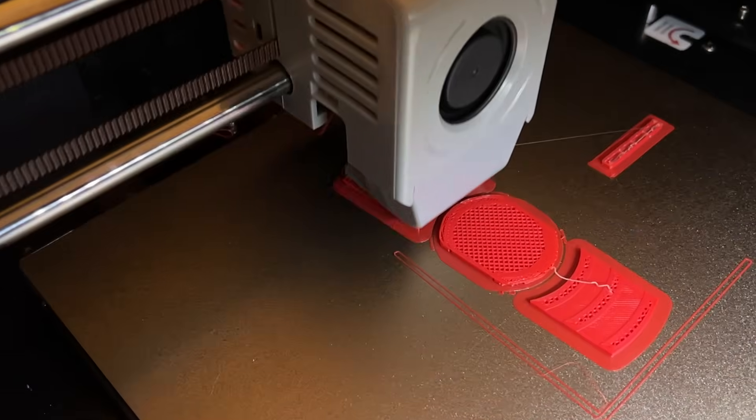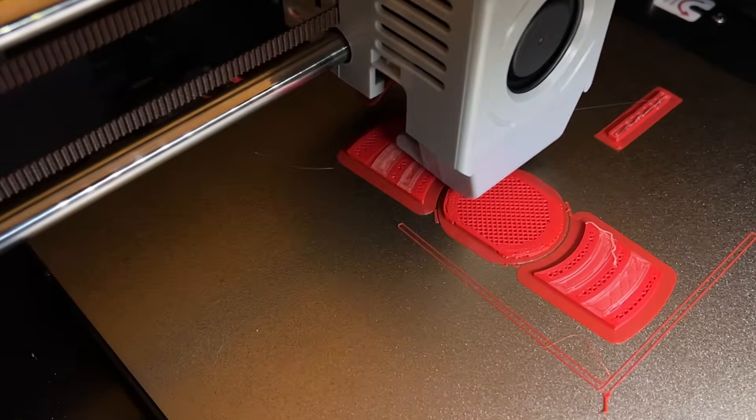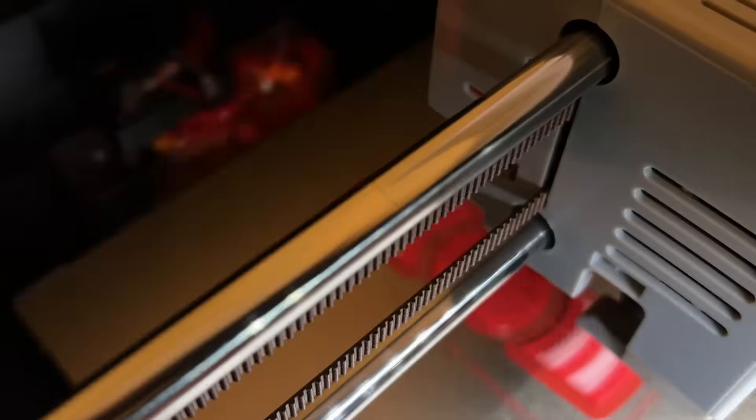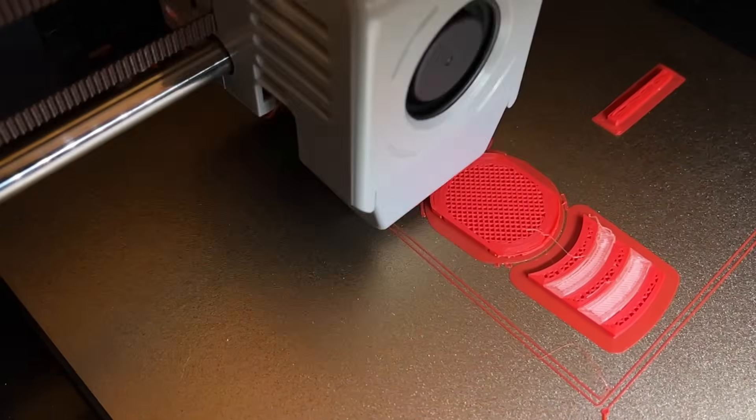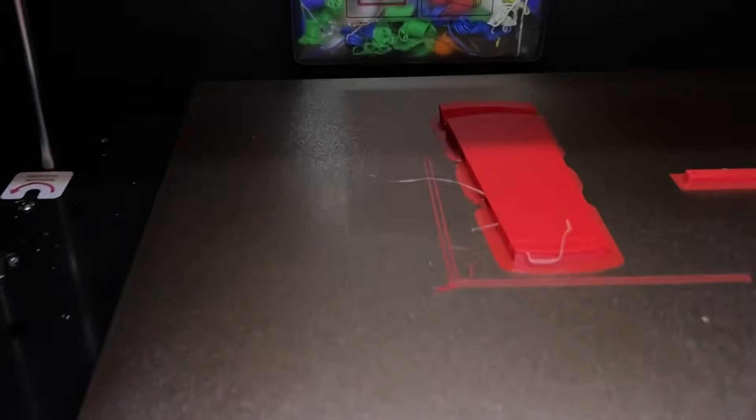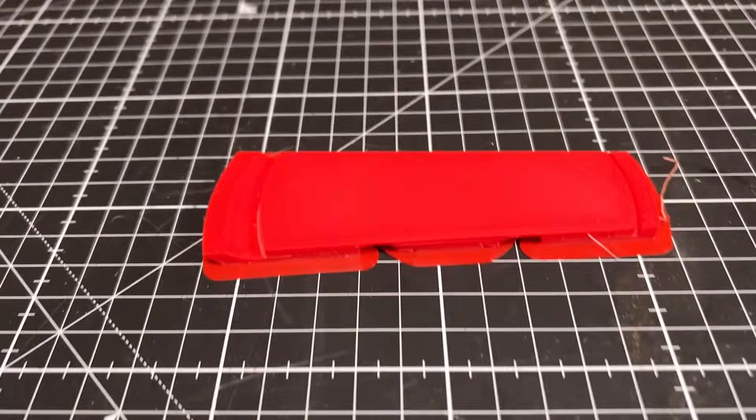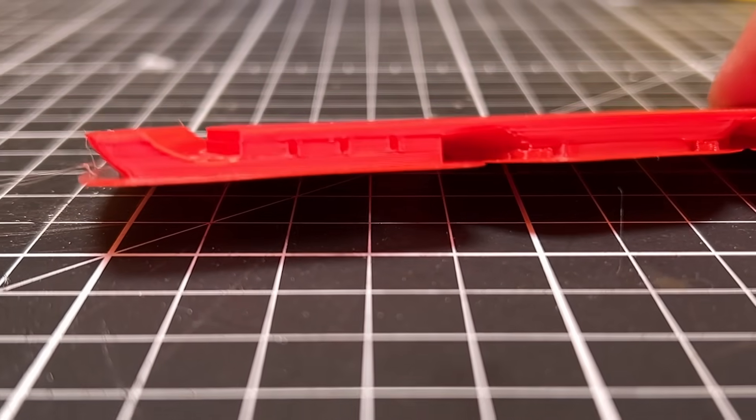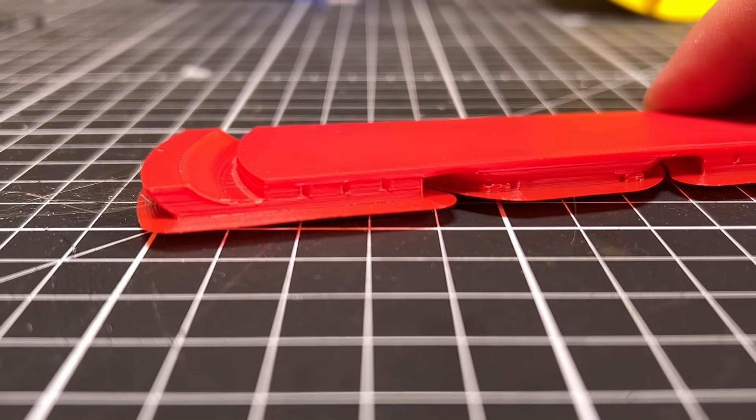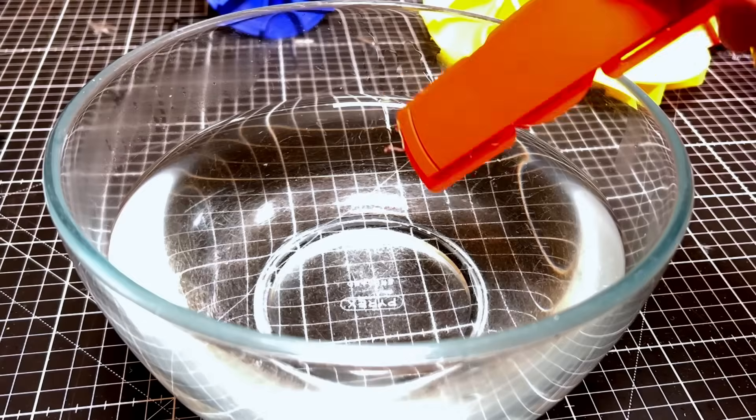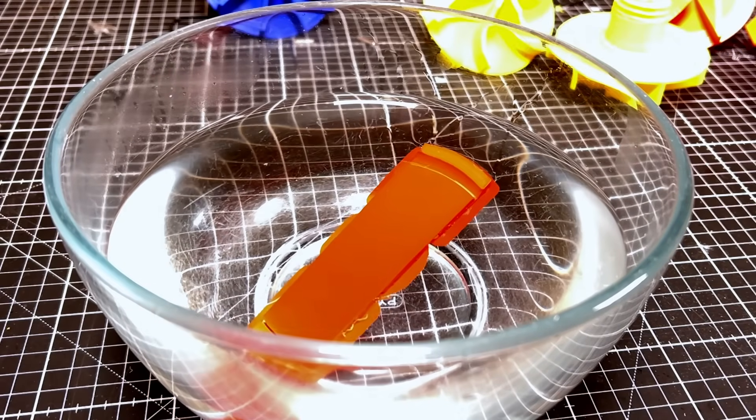First change. Great, and the second change back to PLA. Right, it's done. Great, so far so good. But how easily will the BVOH dissolve and release the assembly? Let's leave the print in warm water, ideally somewhere warm, and see how it does.